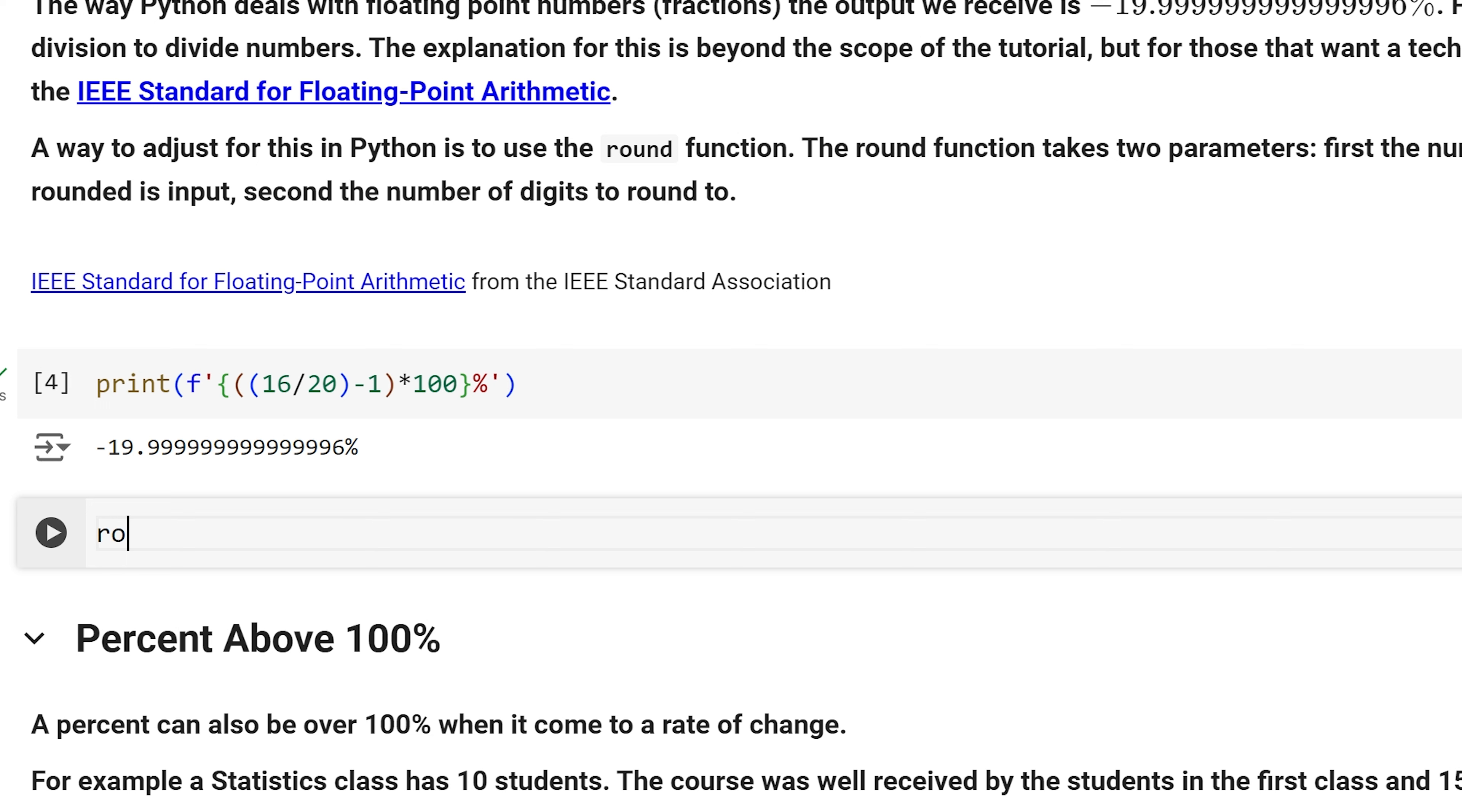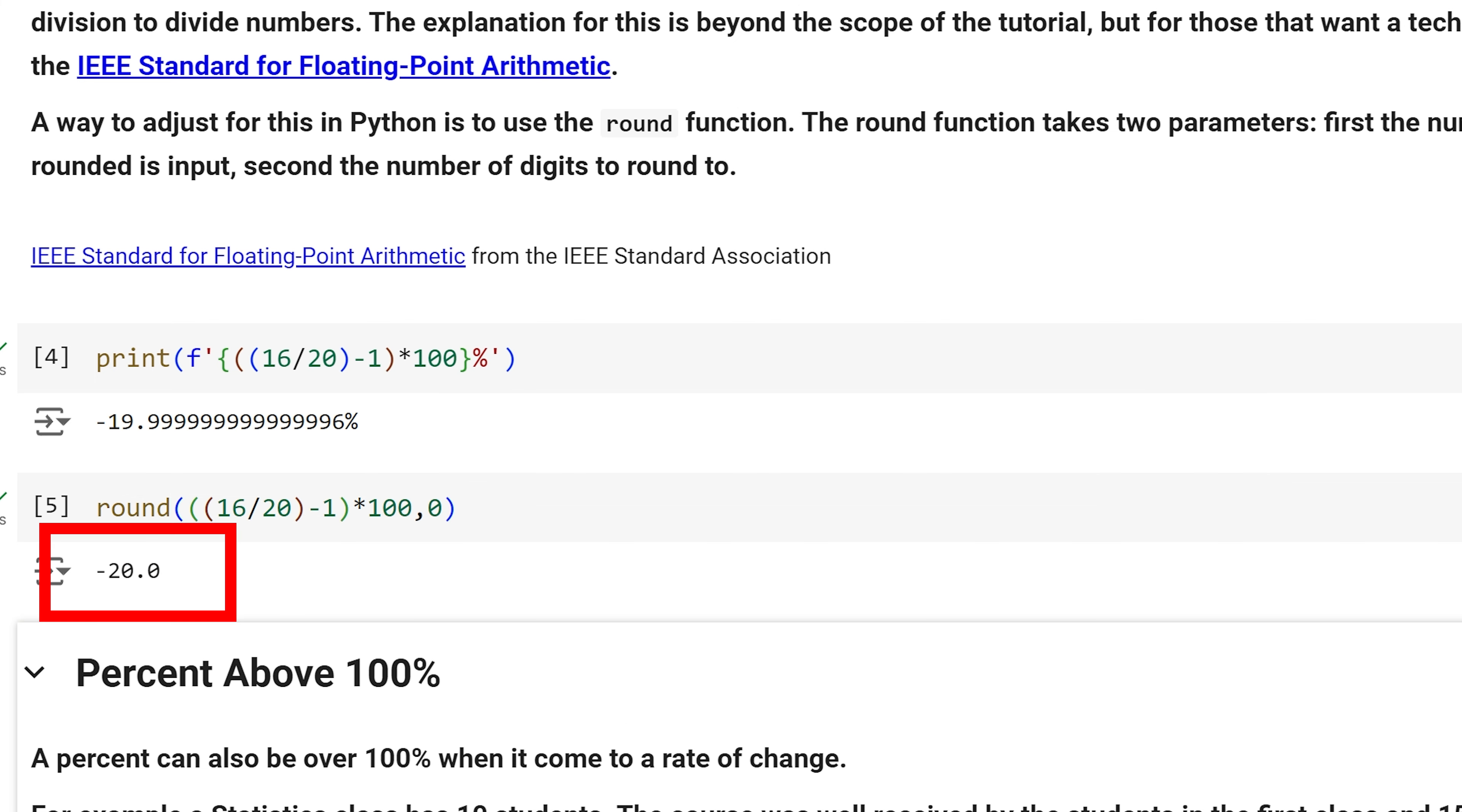A way to adjust for this in Python is to use the round function. The round function takes two parameters. First, the number that is being rounded as input. I am going to copy and paste it in there. Second, the number of digits to round to. I am going to round to zero, which is the nearest whole number. We now have our expected rate of negative 20 percent.